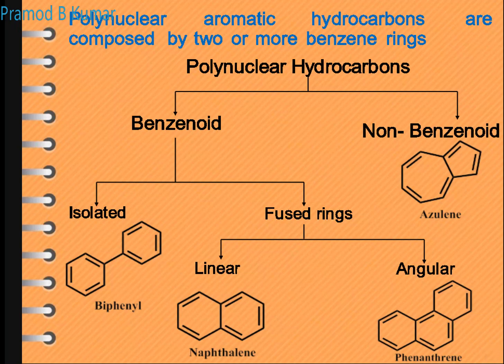Now let us look at the broader classification of polynuclear hydrocarbons. There are two types: benzoid and non-benzoid. In benzoid, there are two subclasses: isolated and fused. In isolated, the two aromatic rings are connected by a single bond — they are not fused — and the example is biphenyl. In fused, one is linear, example anthracene and naphthalene, and the other is angular, example phenanthrene.